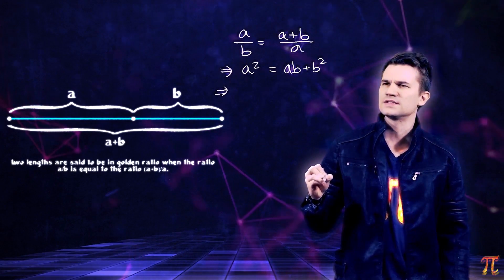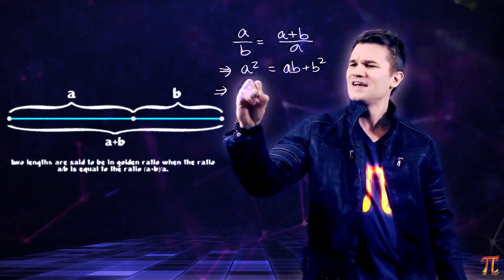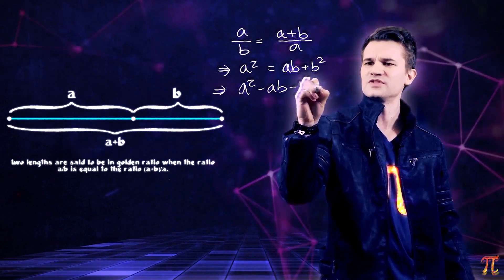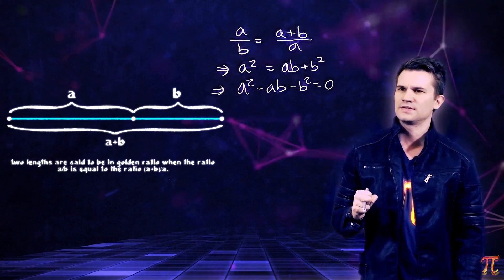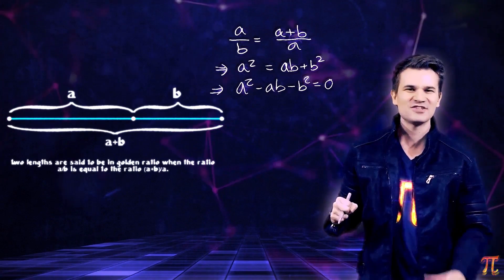Now we can take everything and move it to one side. So we get a squared minus ab minus b squared equals zero. Okay, but the problem is that there are two unknowns, and we can't just decide that b is equal to one. Travesty.